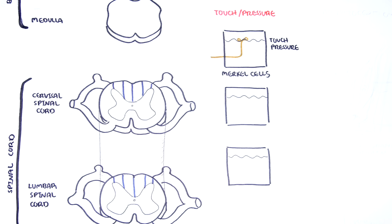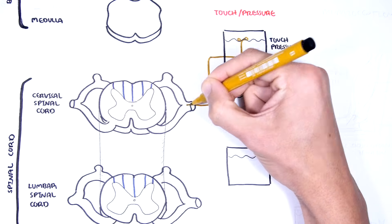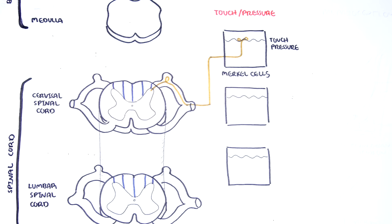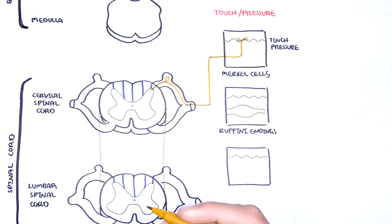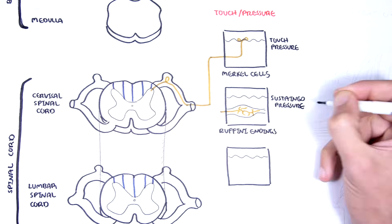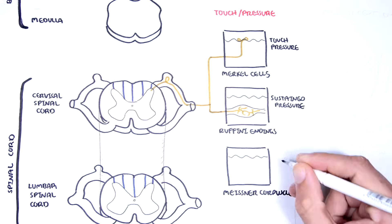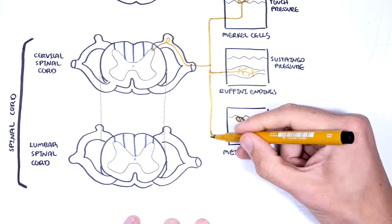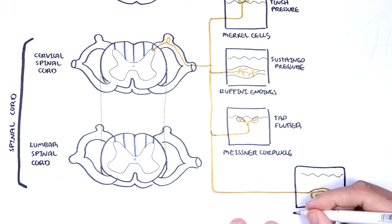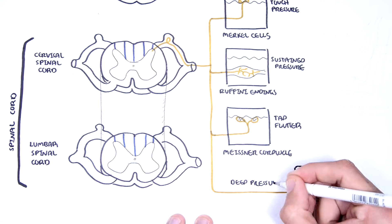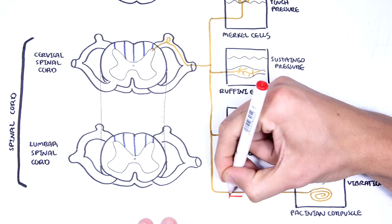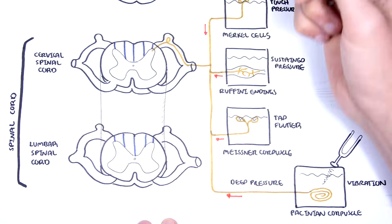This cell carries sensory information to the dorsal column of the spinal cord — in this case, the cervical spinal cord. Ruffini endings are stimulated by sustained pressure. Meissner corpuscles are stimulated by sensory input of tap and flutter. Pacinian corpuscles pick up sensations including deep pressure as well as vibration. So when you use a tuning fork on the skin, the Pacinian corpuscles can detect these changes and send sensory information to the central nervous system.